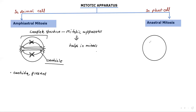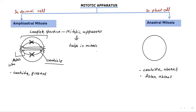In anastral mitosis in plant cells, the centriole is absent — this is very important. Because the centriole is absent, aster formation also does not take place; the aster is absent. The aster is that star-shaped structure visible in animal cells. So in plant cells: centriole absent, aster absent; in animal cells: centriole present, aster present.